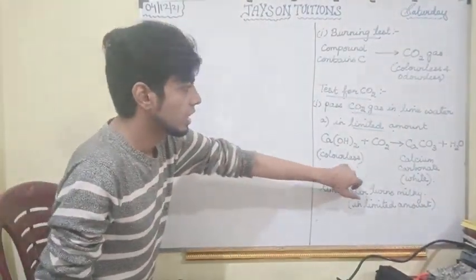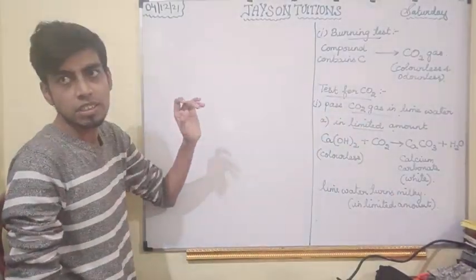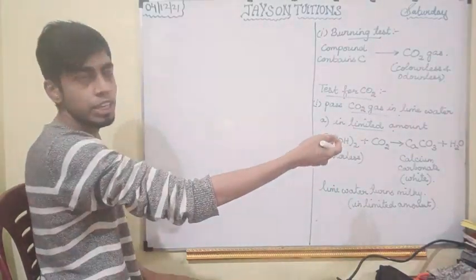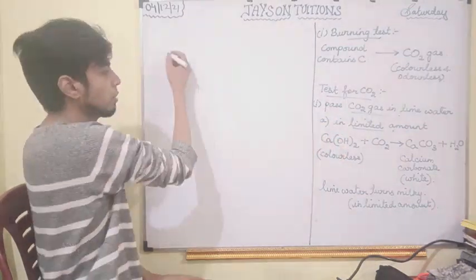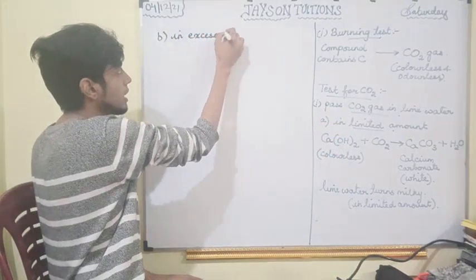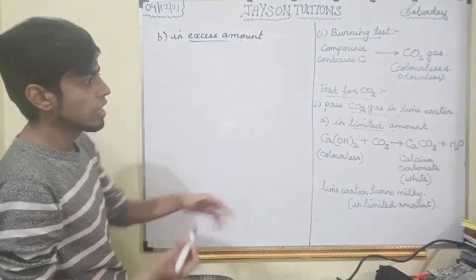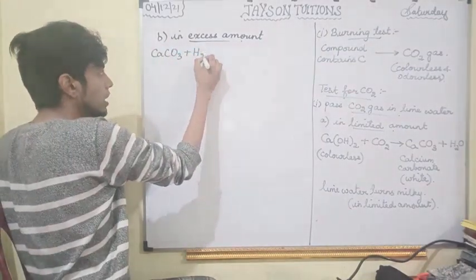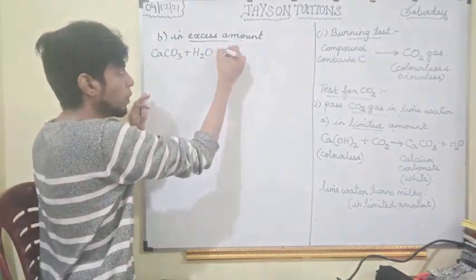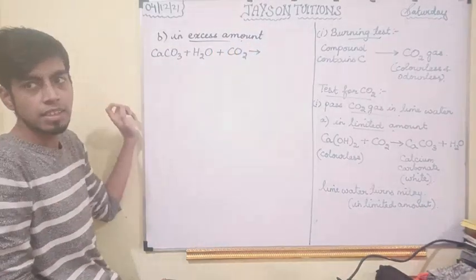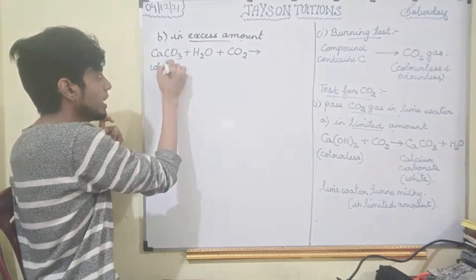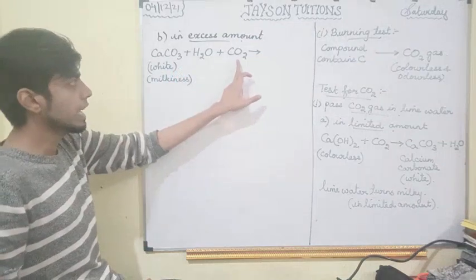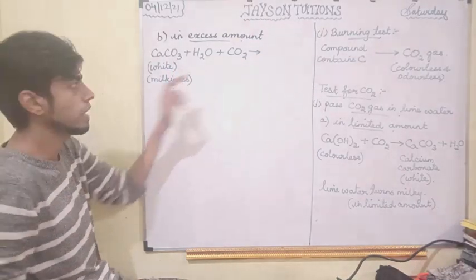Now suppose after it turns milky, if you keep on adding carbon dioxide in excess amount, what will happen? The milky solution already contains calcium carbonate and water. If excess carbon dioxide is added, we get calcium hydrogen carbonate — also called calcium bicarbonate.